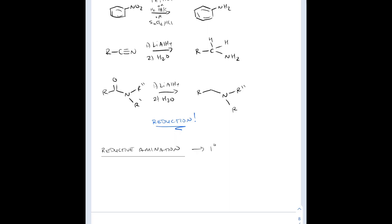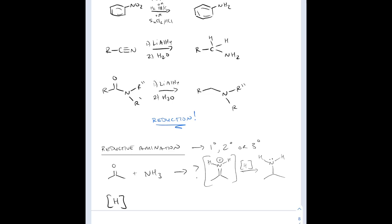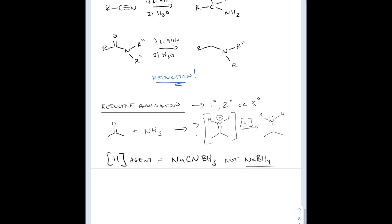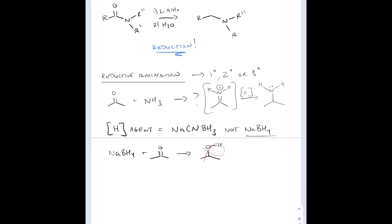Reductive amination is another means to obtain an amine. We've seen where an amine attacks a carbonyl group to form an iminium ion. If that iminium ion is reduced, we get an amine product. We're going to add a reducing agent — sodium cyanoborohydride, as opposed to regular sodium borohydride. We don't want sodium borohydride because it reduces ketones to alcohols, and we don't want that as a side product since this is a one-pot synthesis.